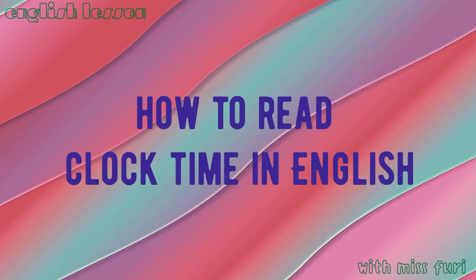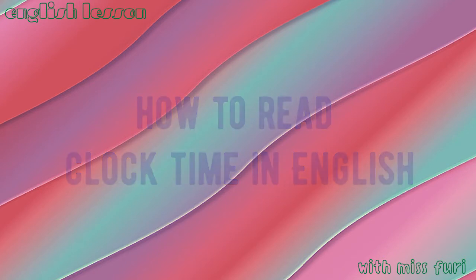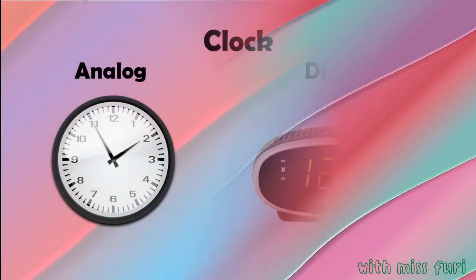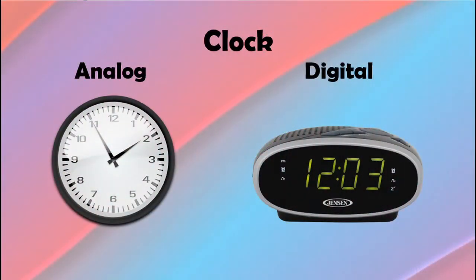How to read clock time in English. There are two kinds of clock we use in daily life: analog clock and digital clock.